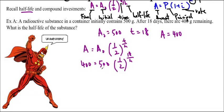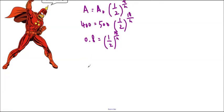We haven't isolated the exponent part, so we can't go into logs yet. We have to move this over. So 400 divided by 500 is 0.8 equals one-half to the 18 over h. Now that I have an isolated exponent, I can put it in the log. So log base 0.5, that's one-half, of 0.8 is equal to 18 over h.